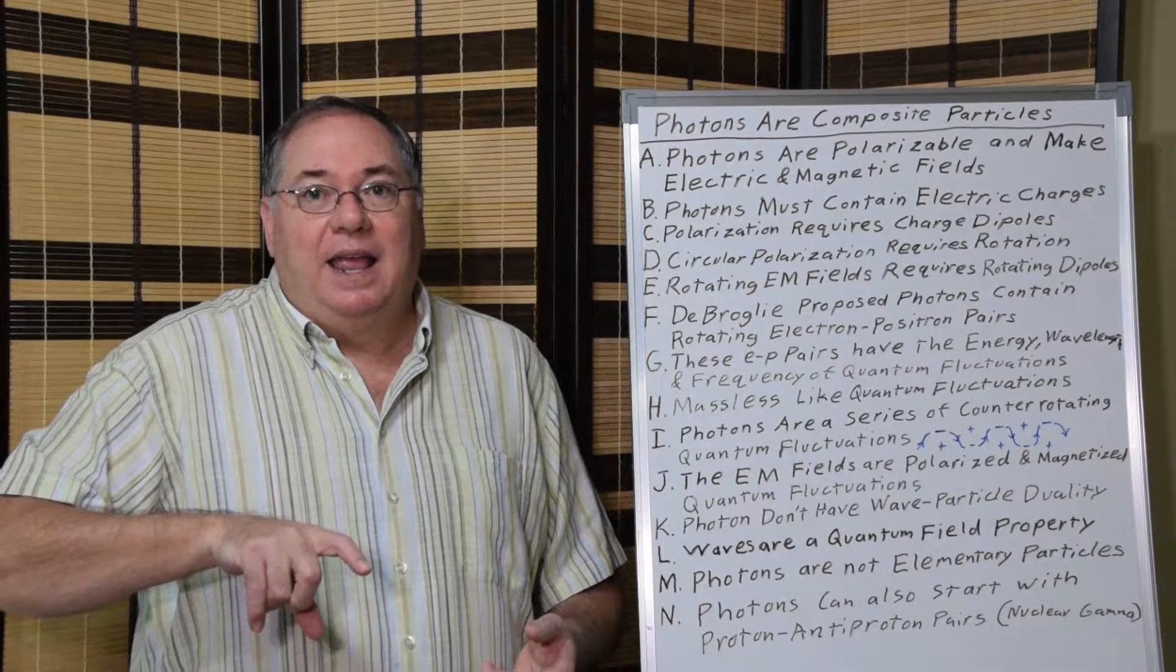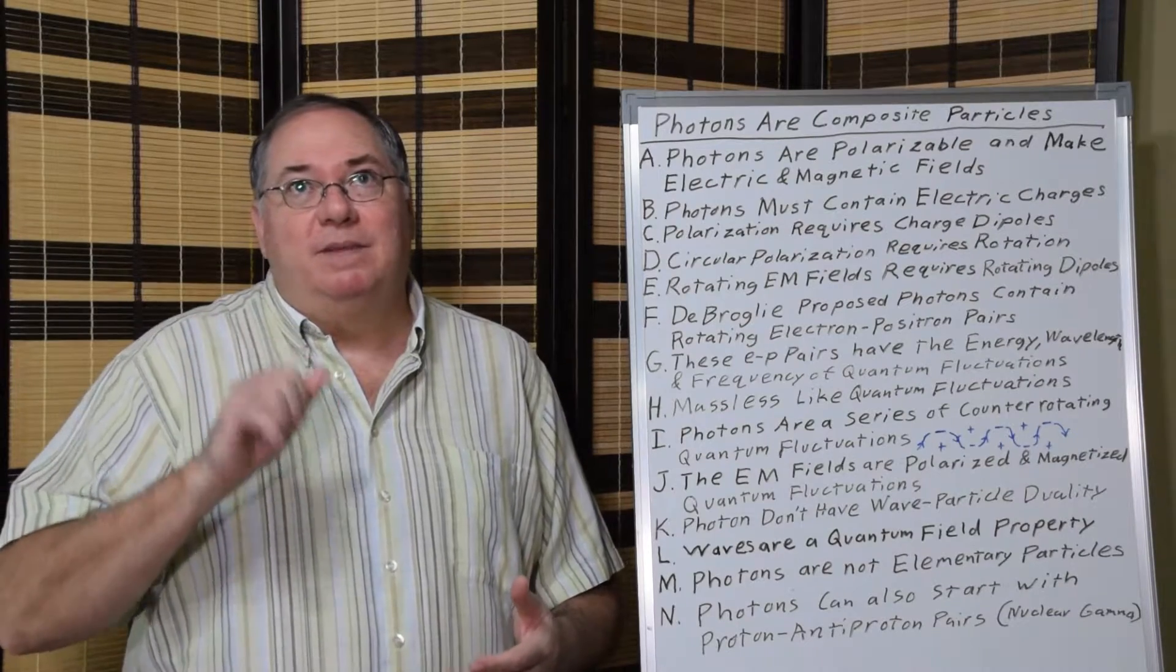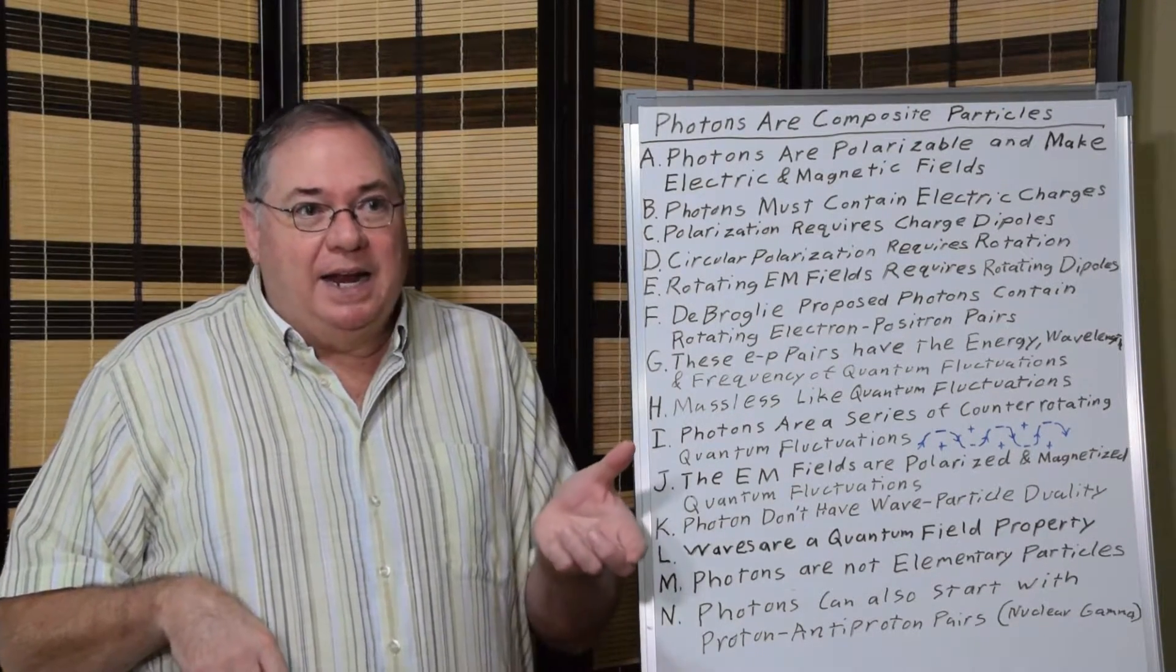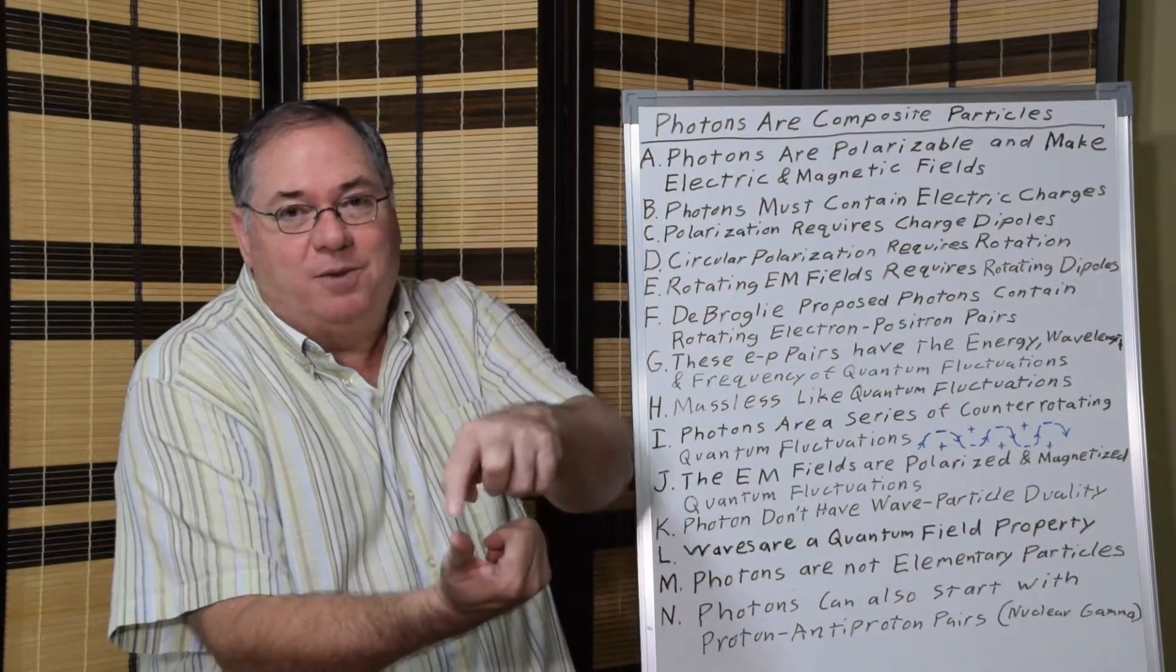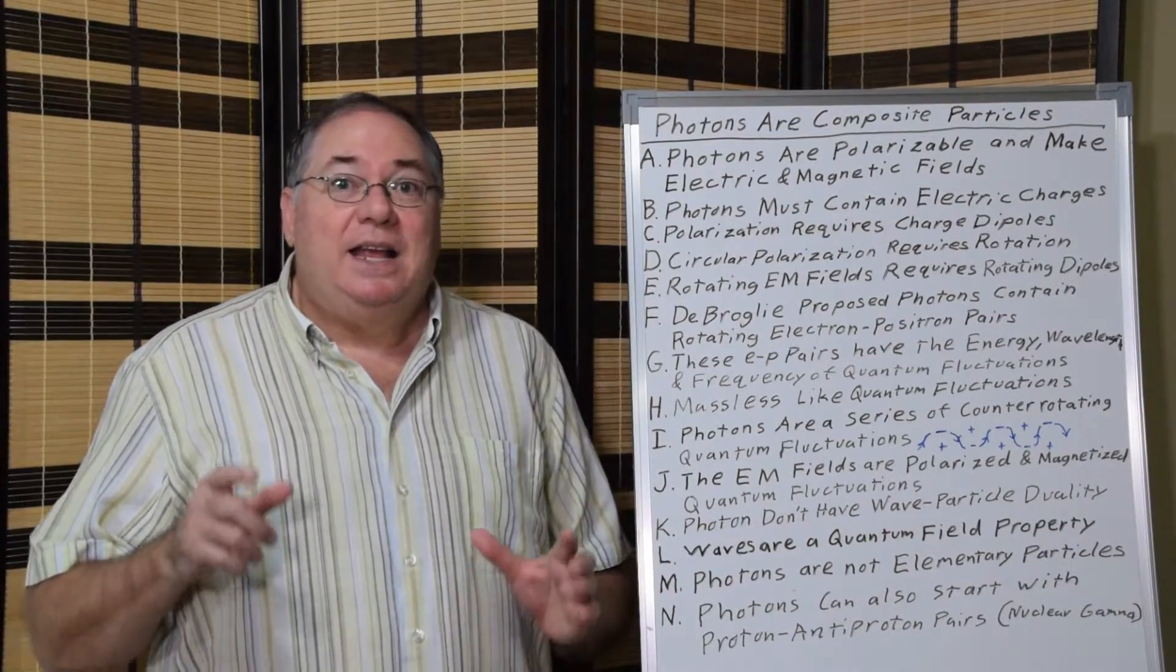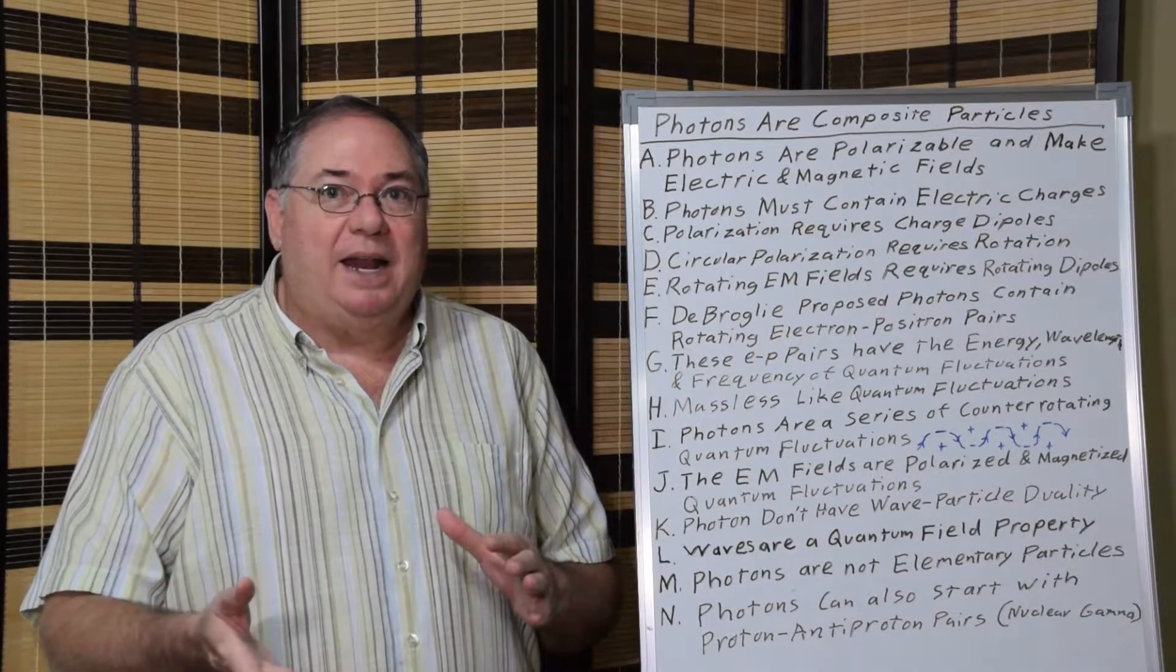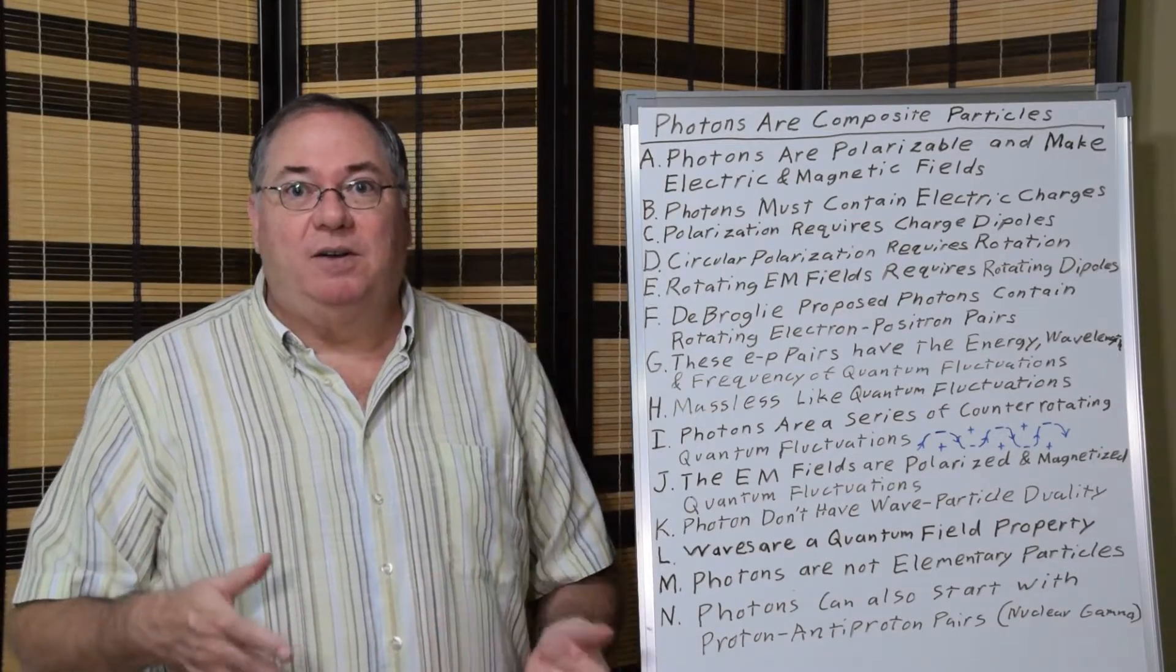And you can curl your finger in the direction of rotation. Say I had a dipole rotating this way, I can curl my fingers this way and say the north pole points out. So we can determine that there's a magnetic field coming from a rotating dipole that's in the center of a photon.